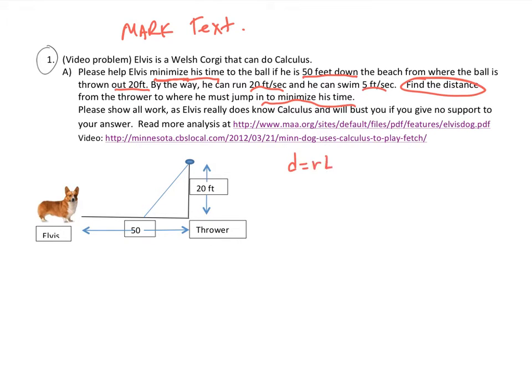So we want to set up an equation for time. If you know D is equal to RT, a rate, if you go 5 feet per second and you go for 3 seconds, that's going to be 15 feet that you're going to be going. So that's distance equals rate times time. But what are we trying to optimize? We are trying to optimize time. So if I manipulate this a little bit, I'm going to end up with this equation right here. And so the time is what we want to minimize.